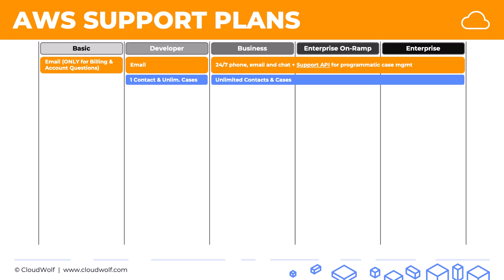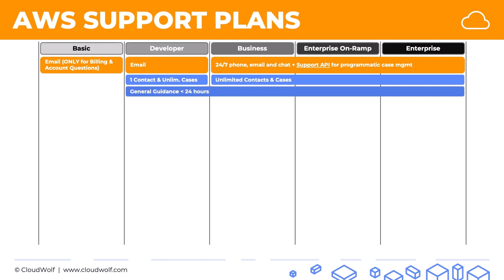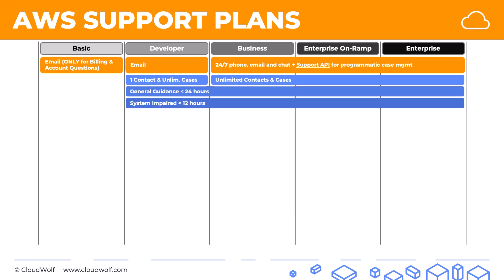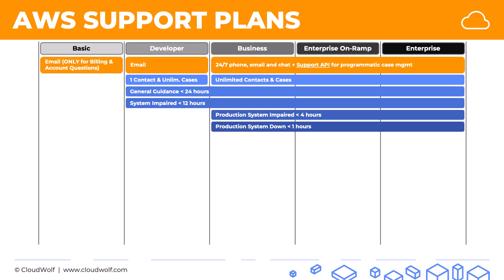How quickly do they reply? For general guidance questions, all four plans except basic reply within 24 hours. For a system impaired case, they reply within 12 hours. In business, enterprise on ramp, and enterprise, if a production system is impaired you get an answer within four hours. If a production system is down, you get a reply within one hour. In enterprise on ramp, if a business-critical system is down, you get a reply within 30 minutes. In enterprise, you get a reply within 15 minutes.